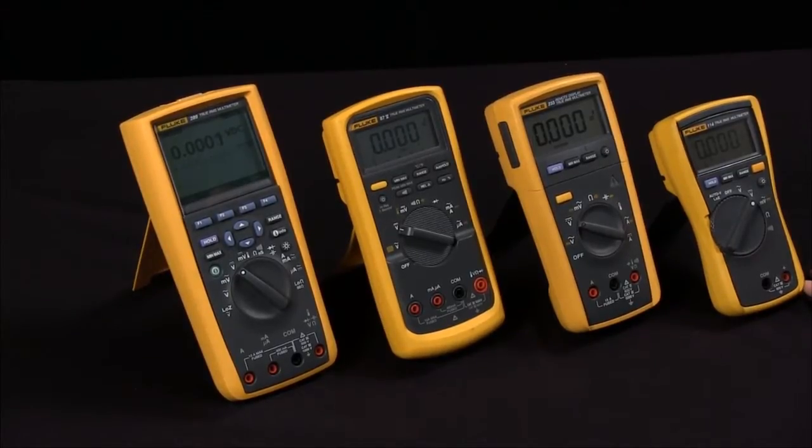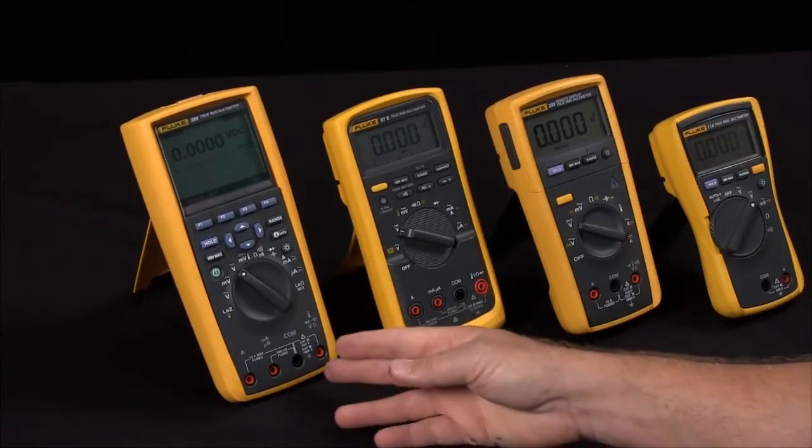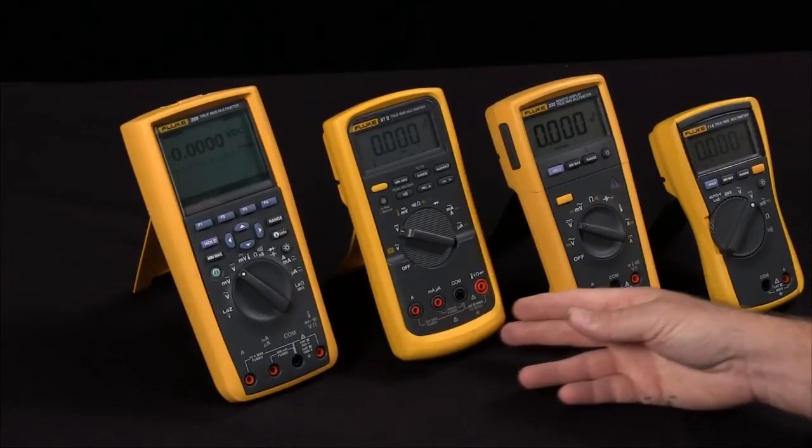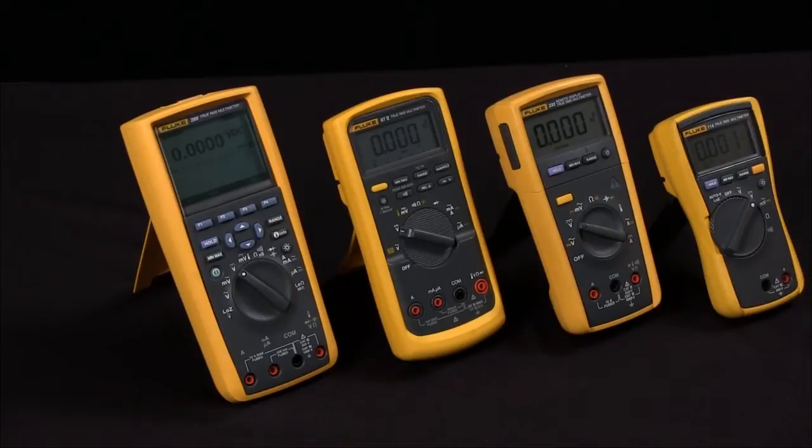There's a difference between the specifications of accuracy and resolution. Accuracy relates to how closely the measurement you're taking is to the true value of that measurement, and different multimeters will have different levels of accuracy depending on the capabilities within that multimeter.